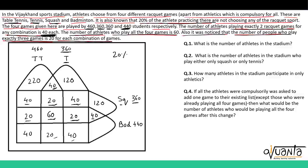At last, for badminton, this area would be 440 minus the known regions: 40, 20, 60, 60, 60, 120, 120, 140, plus 40 is 180, plus 20 is 200, plus 40 gives 240. So 440 minus 240 gives us 200, so this will be 200.